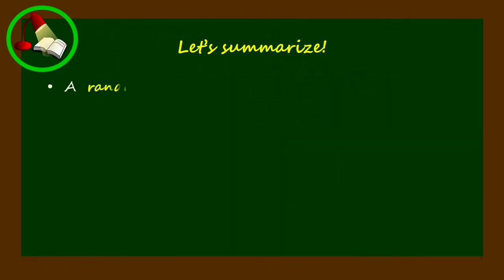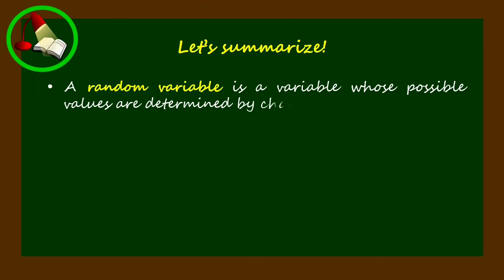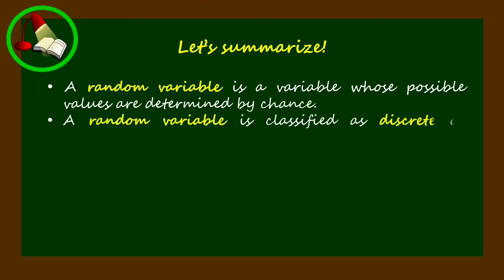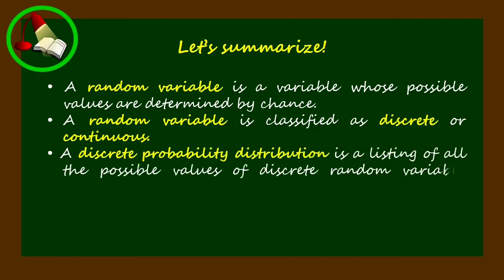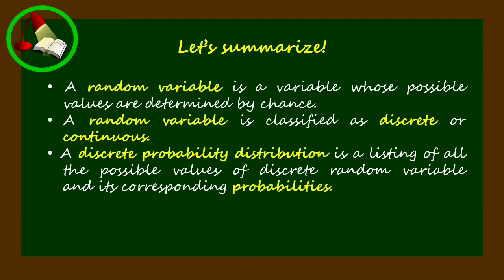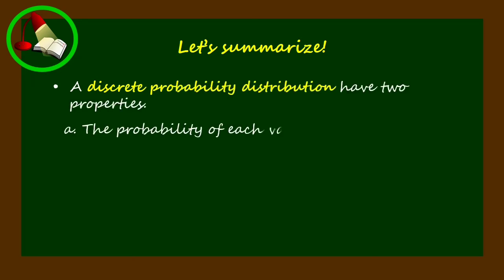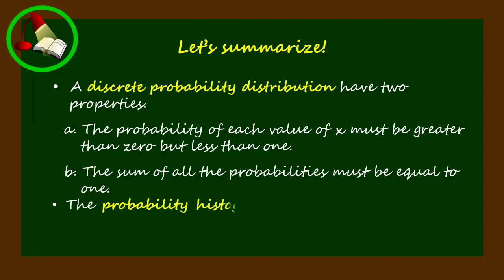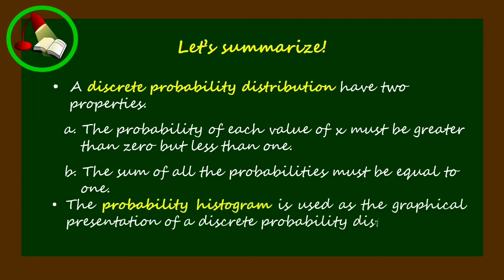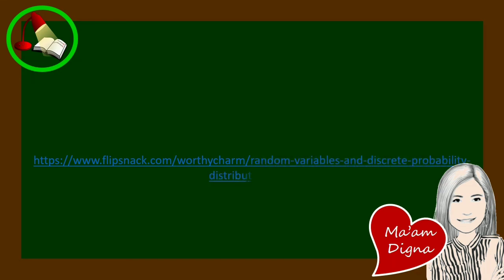Let's summarize. A random variable is a variable whose possible values are determined by chance, and is classified as discrete or continuous. A discrete probability distribution is a listing of all the possible values of a discrete random variable and its corresponding probabilities. It has two properties: the probability of each value of X must be between 0 and 1, and the sum of all probabilities must equal 1. The probability histogram is used as the graphical presentation of a discrete probability distribution. Please see the provided flipbook link for random variables and discrete probability distribution, then carry out the indicated activity. Thank you.